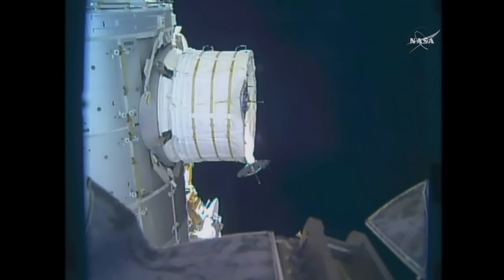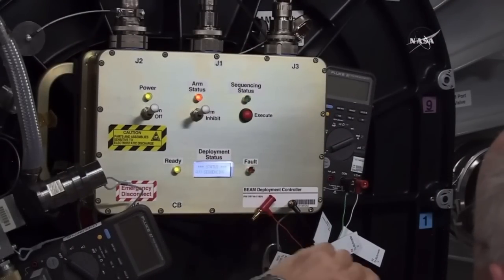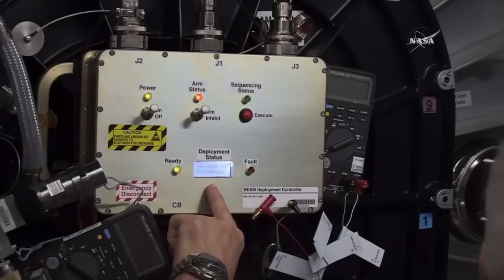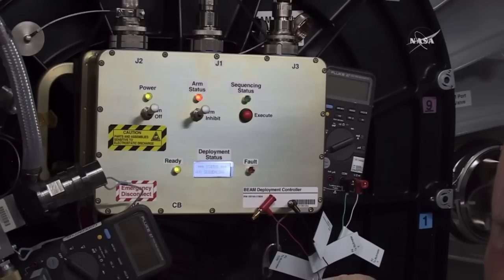The first steps in that expansion process were the closing of the ascent valve. These are the valves that allowed the interior BEAM to be exposed to the vacuum of space during ascent, during launch.